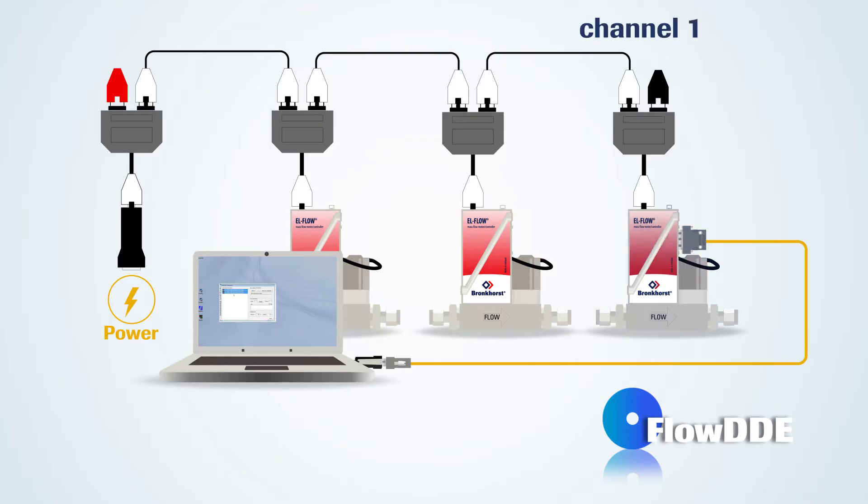Channel numbers are assigned to all connected instruments and for each channel, the applicable parameter DDE items are created. These parameter items are to be used by client applications. After all DDE items are created, Flow DDE starts polling parameters from the instrument or instruments.